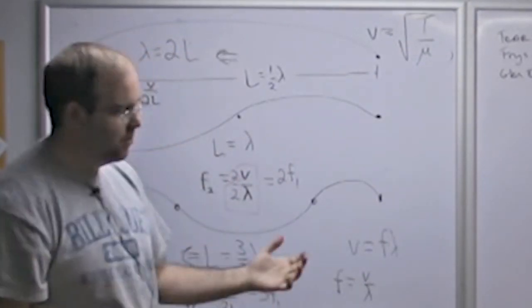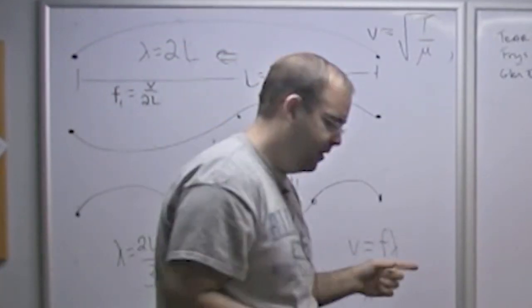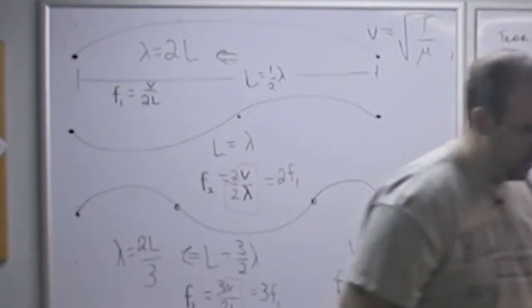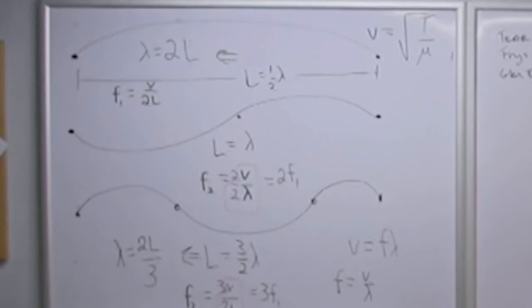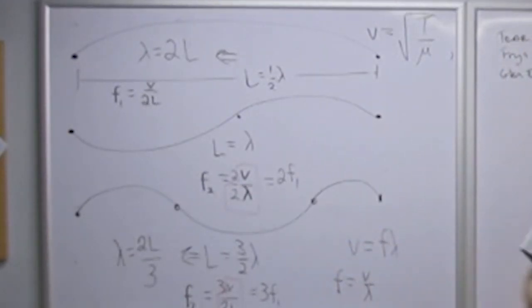Now for a real instrument, the approximation that the wave speed doesn't change or that the length is exactly the same, those are not exactly true, but they're approximately true. So these expressions are all approximately true for all real stringed instruments. They're not exactly true, but they're very, very, very close.